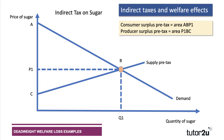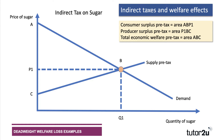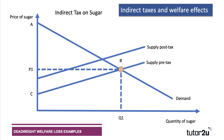Consumer surplus is the area A B P1. Producer surplus is the area P1 B C: the area above the supply curve and below the price. So before the tax, consumer surplus is A B P1, producer surplus is P1 B C, giving a total economic welfare — adding producer and consumer surplus together — of area A B C.